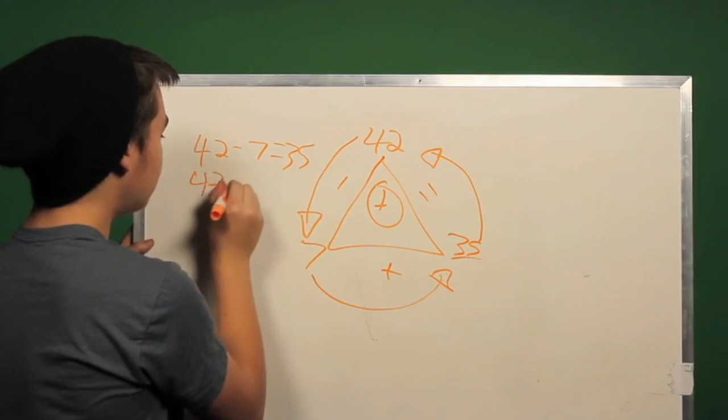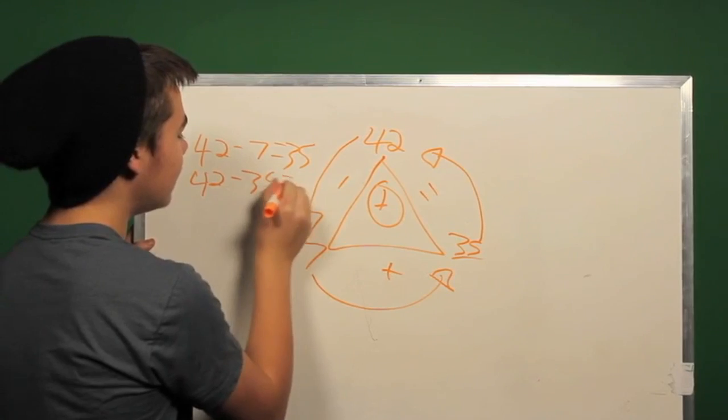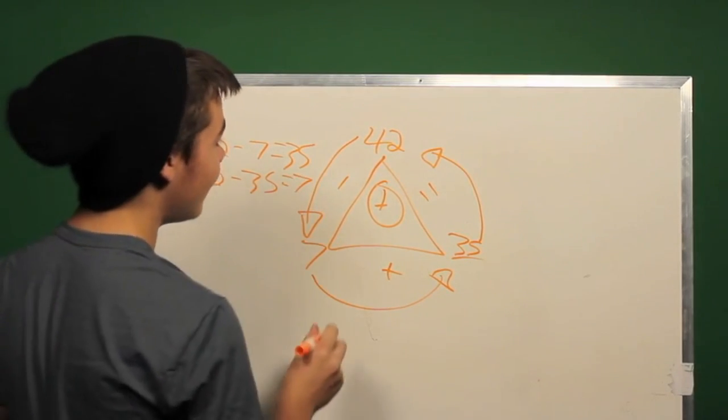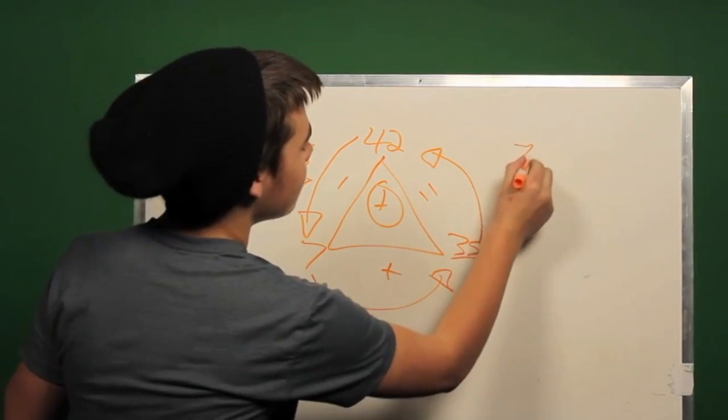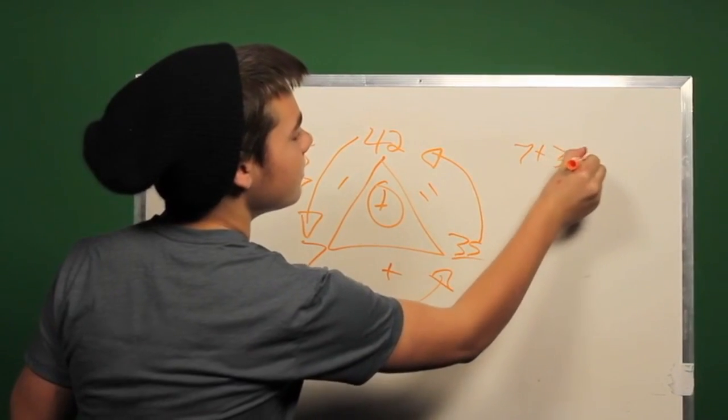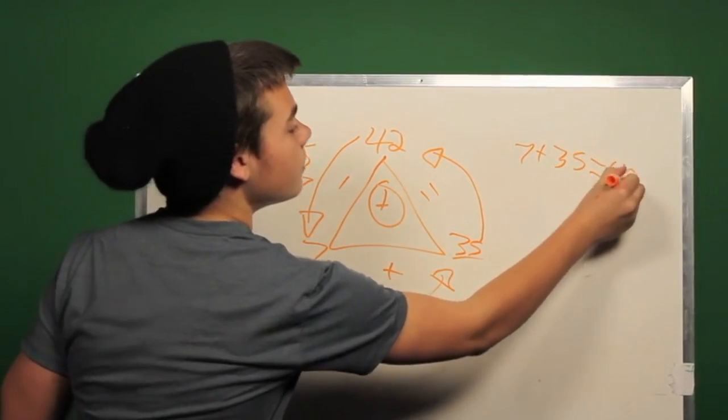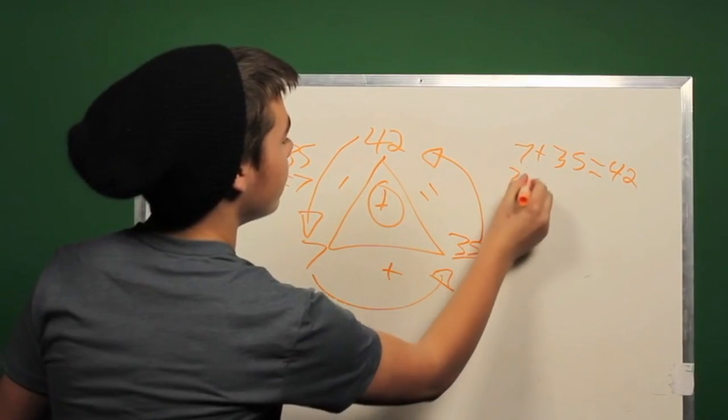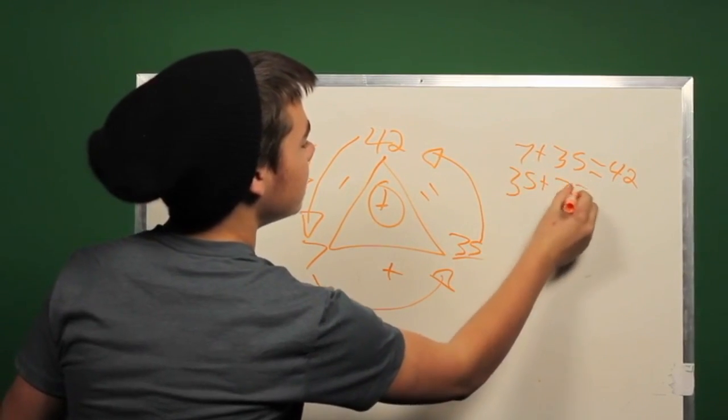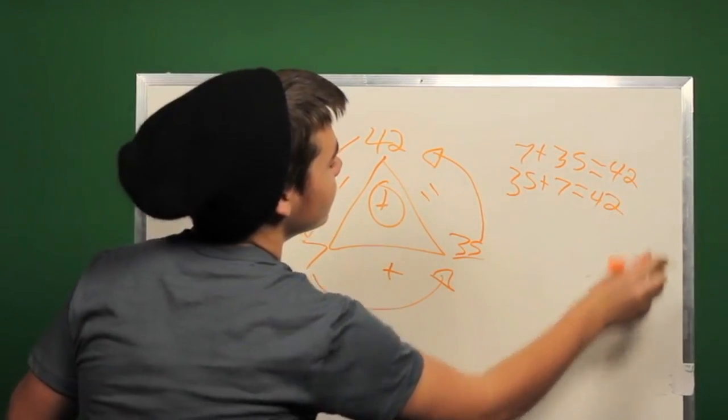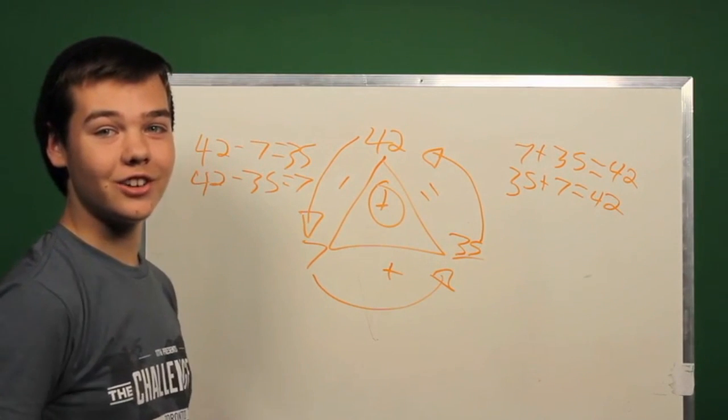And 42 minus 35 equals 7. We also know that 7 plus 35 equals 42, and 35 plus 7 equals 42 as well. And that's how you solve your addition triangles.